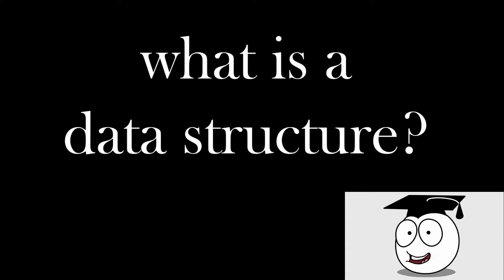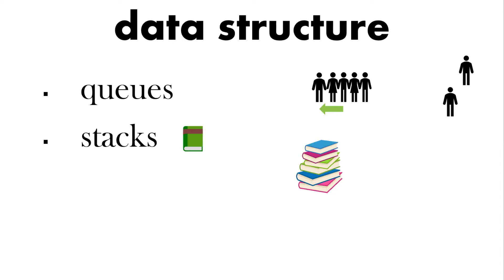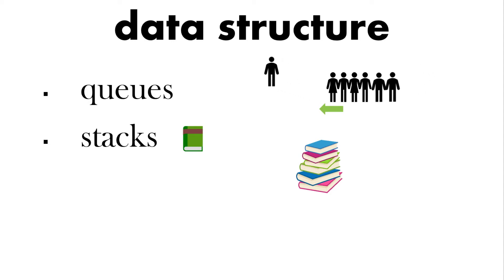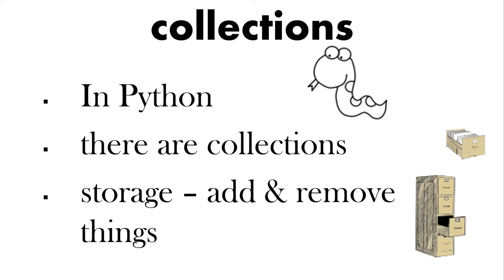So what is a data structure? In computer science we have data structures based on real life. For example, a queue — we see people join queues, going from the front to the back. Stacks — we have a stack of books, we put a book on top, and if we want to take one off we take it from the top. So they are data structures: structures that hold data.